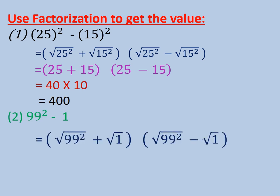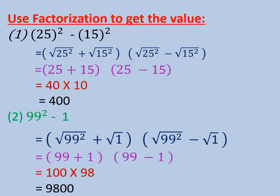99² minus 1²: 1 is 1², so the factorization will be (99 + 1)(99 - 1), which equals 100 times 98. Then the answer will be 9800.